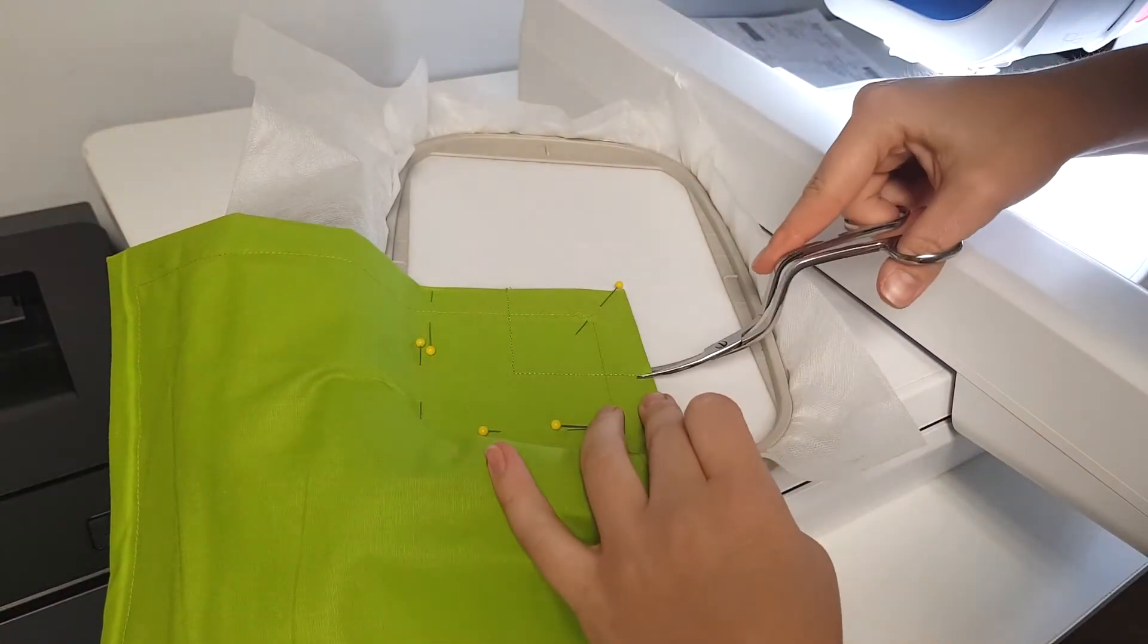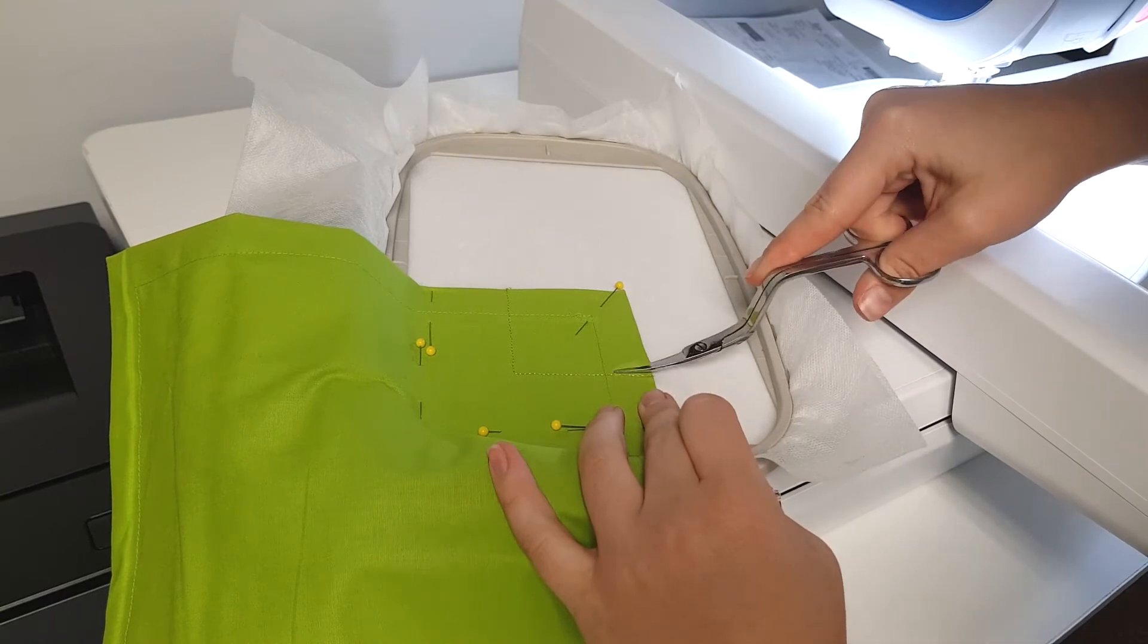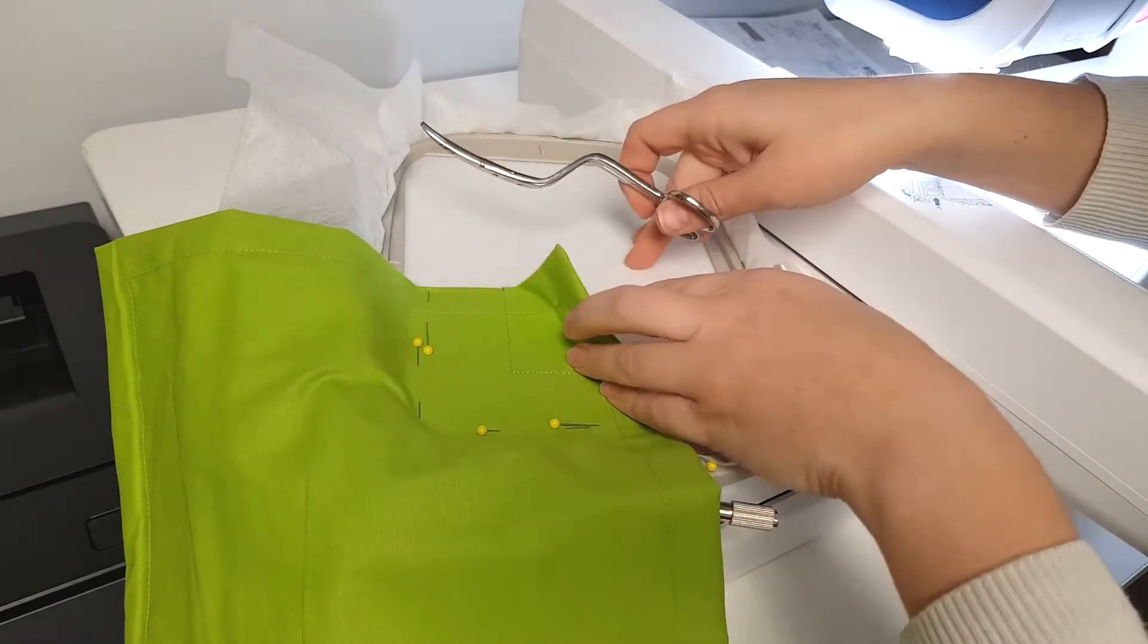Remove the embroidery frame again and cut the fabric away as close as possible to the tacking line without cutting the stitches.